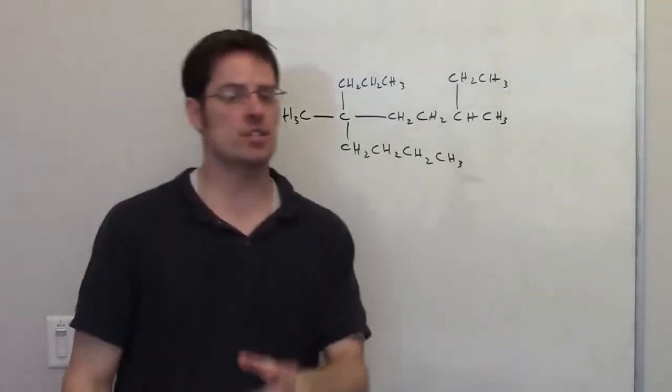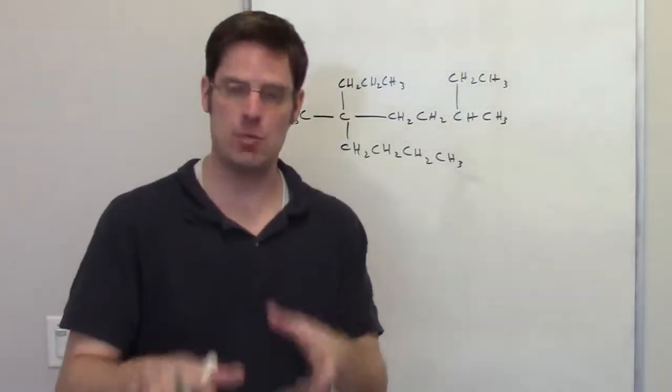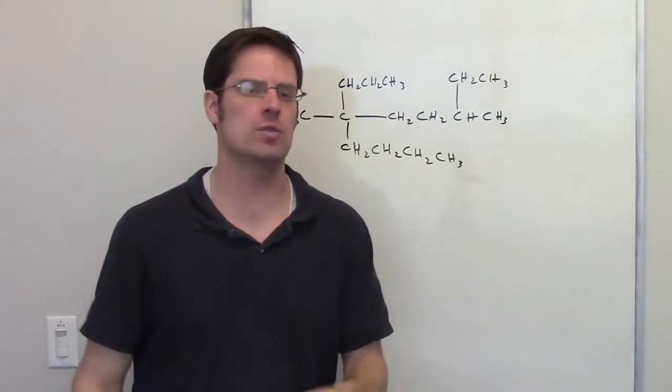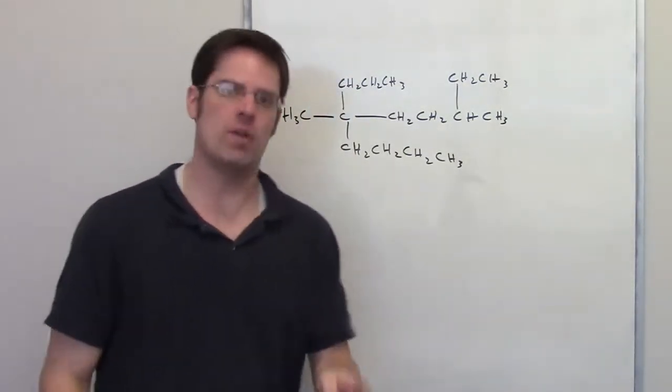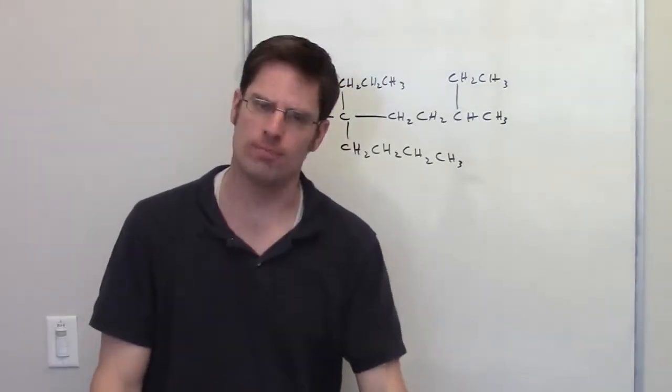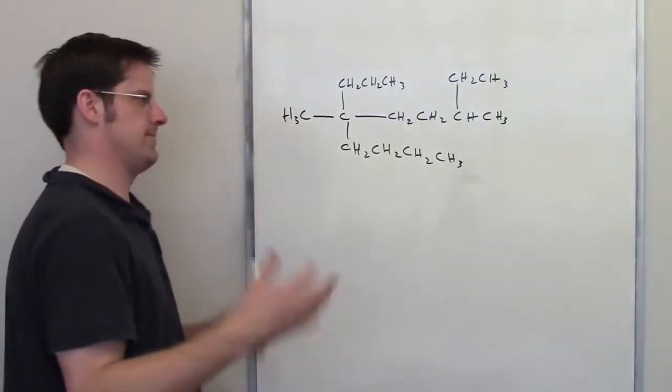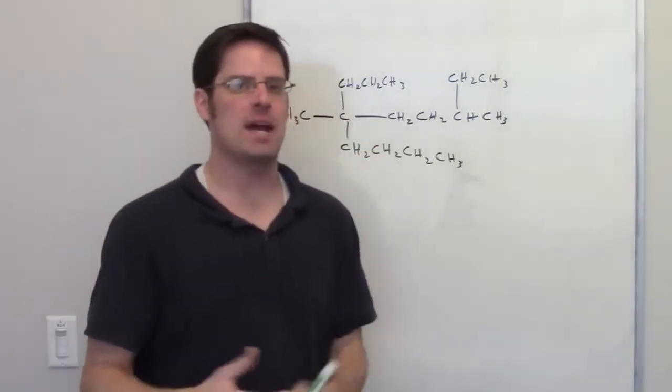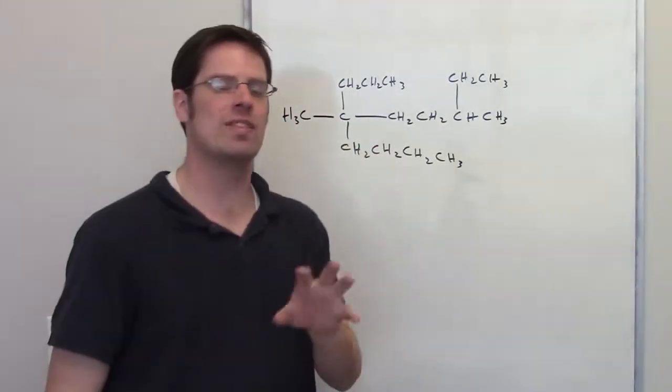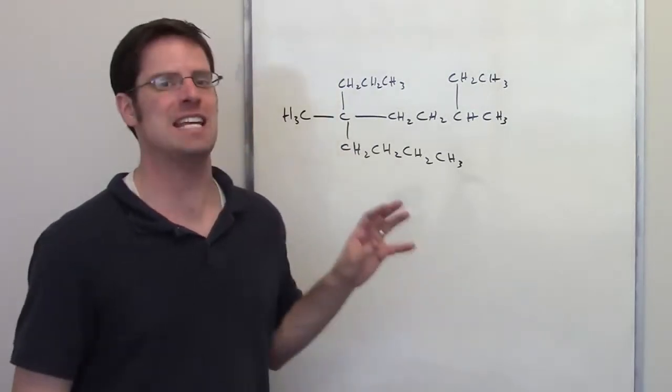So for this question which asks us to devise the systematic IUPAC names for a couple of different molecules, I'm not going to do all of the answers for you. I am going to do two of them, and then I'll let you do the others on your own. Let's take a look at the first one that I've chosen randomly. In order to be able to come up with a systematic IUPAC name, you first of all have to determine what the longest carbon chain is in the molecule.